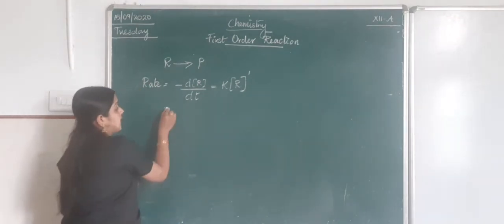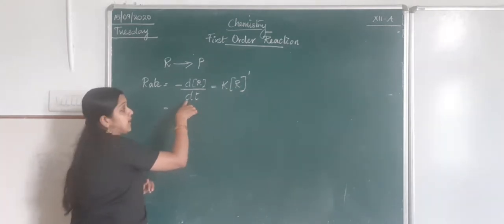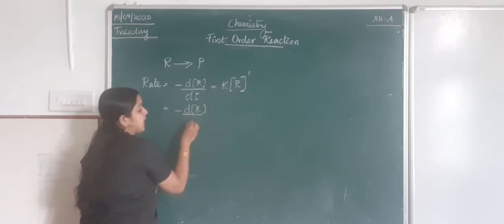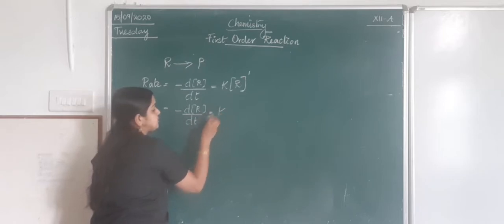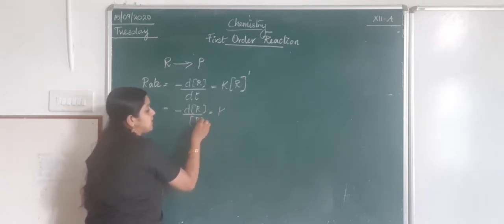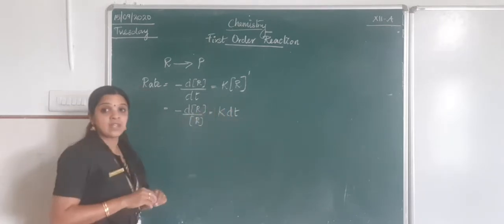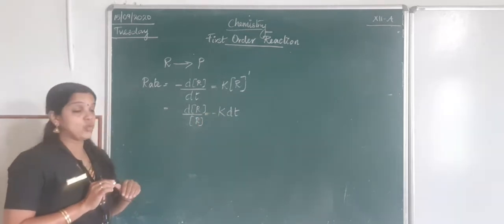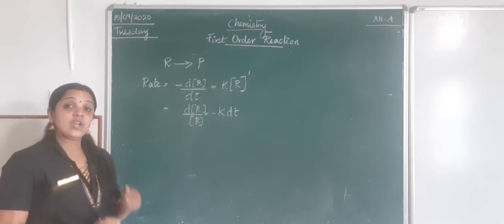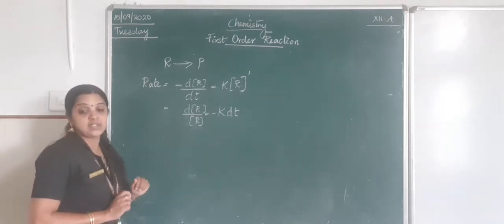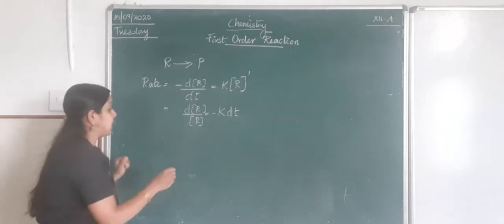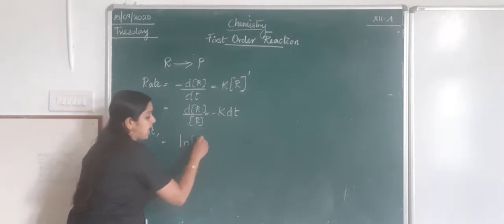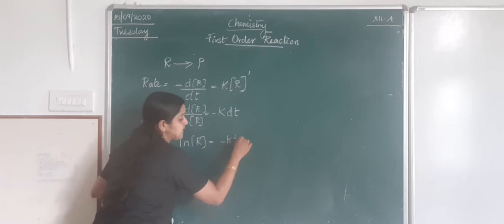Rearranging, we bring R down and dt to the other side: dR/R = −k dt. This is the differential rate equation. Integrating both sides, we get ln R = −kt + I, where I is the integration constant. This is our first equation.